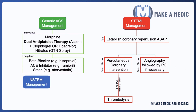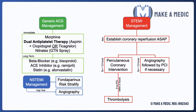For NSTEMI management, patients will be given fondaparinux 2.5mg subcutaneously, which is a direct factor Xa inhibitor that has been shown to improve outcomes. They will then be risk stratified using scoring methods such as the GRACE score. If patients are deemed high risk, they are likely to undergo angiography quite soon to assess the patency of the blood vessels and the need for stenting. If they are low risk, they may be suitable for medical management alone at that point in time.